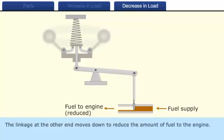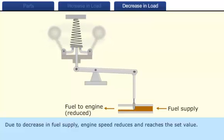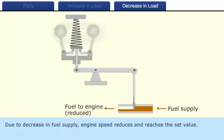The linkage at the other end moves down to reduce the amount of fuel to the engine. Due to decrease in fuel supply, engine speed reduces and reaches the set value.